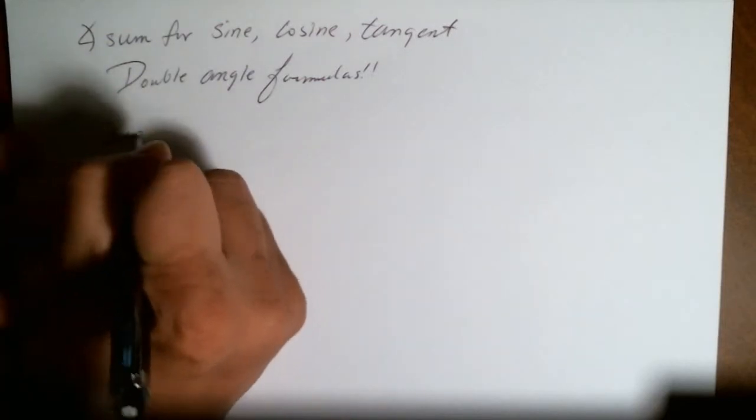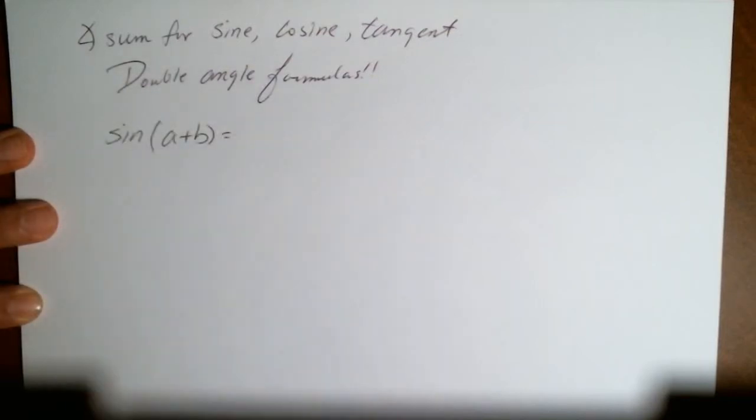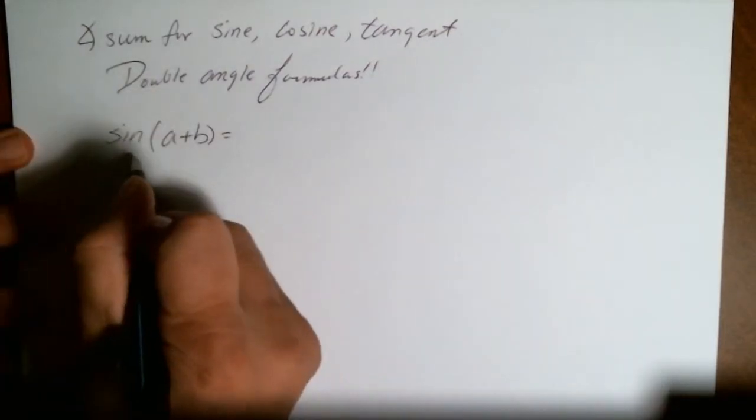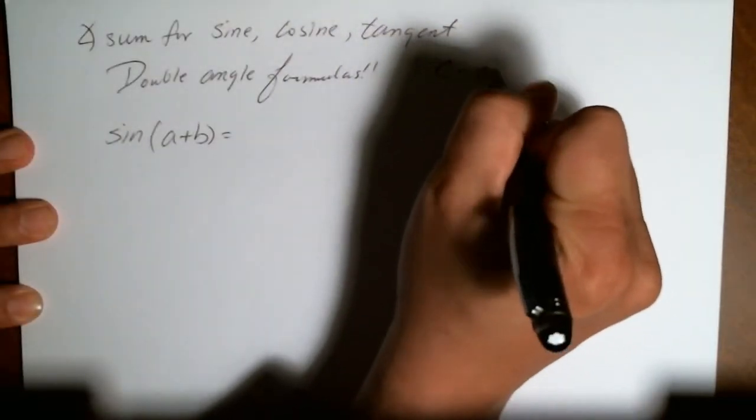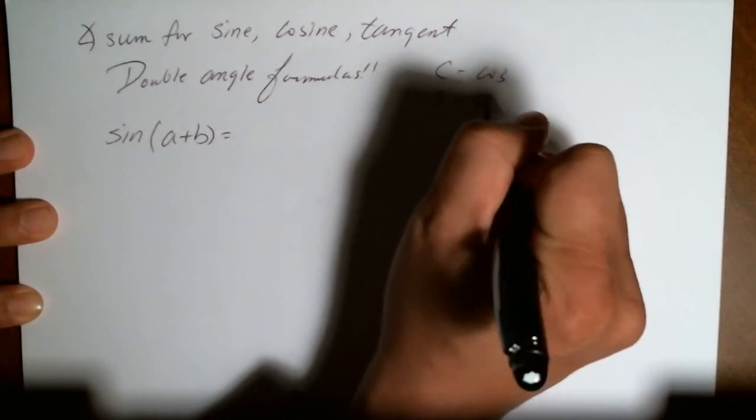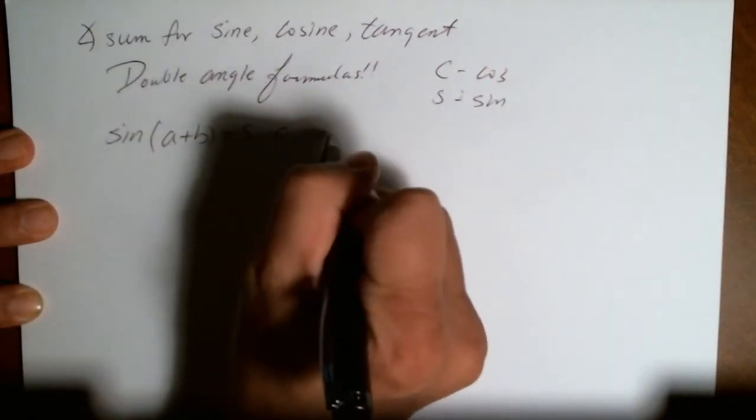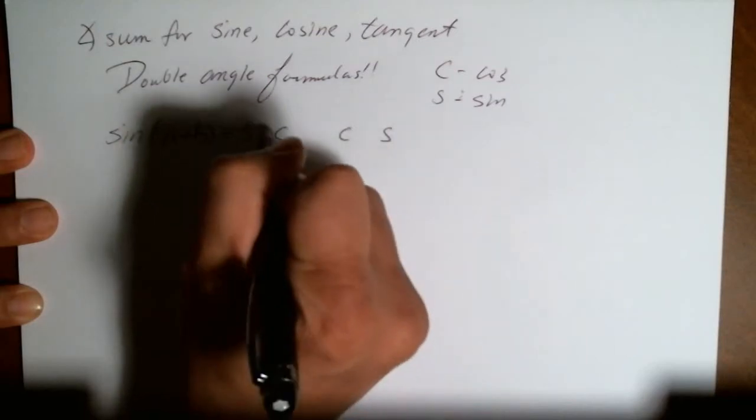So let's start with the first one, sine of A plus B. What is that equal to? Well, the way I like to memorize it, I like to put C for cosine and S for sine. So sine of A plus B is sine, cosine, cosine, sine, A, B, A, B, keep the sign.